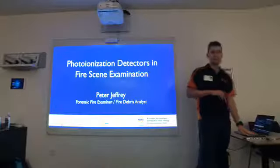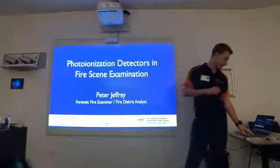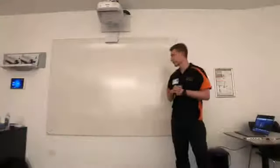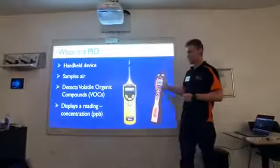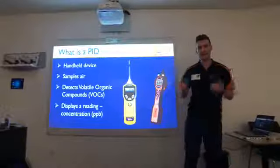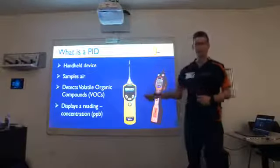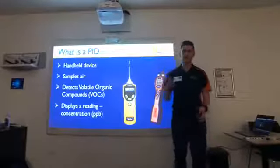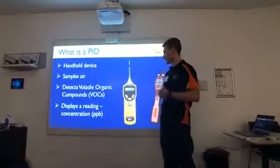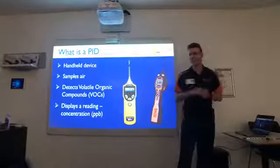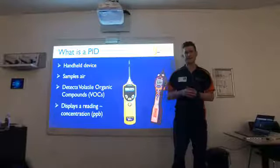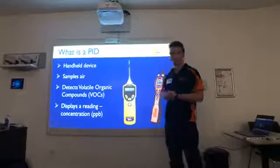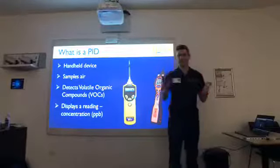We'll do a real brief refresh on what a PID is for those who don't really remember or haven't seen it before. These are PIDs — examples of two on the market. There are a range of them out there. They're handheld devices, so you walk around with them in a scene and point them at stuff. It samples air and what it's doing is detecting volatile organic compounds — compounds that evaporate easily and turn into gases. It spits out a reading in parts per million or parts per billion, which is a concentration level.